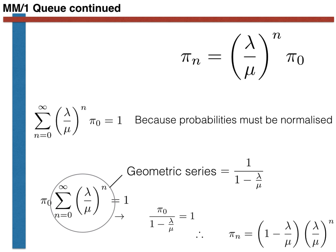Inserting this value for pi_0 into our expression, the probability of having n people in the queue is given by the expression shown here. One final note: the geometric series only converges if lambda over mu is less than one — meaning the arrival rate lambda must be less than mu, which is one over the average service time. In other words, the queue only has a stationary distribution if customers are not arriving faster than they can be served, which agrees with our intuition.